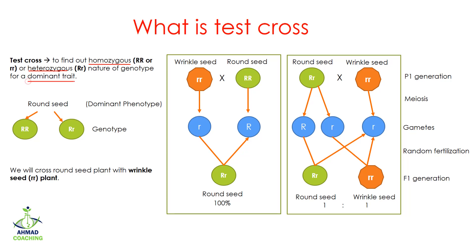For example, you have two plants — one round shape plant and the other plant is also round shape. Phenotypically they both are round shape, but I want to find out whether they are homozygous or heterozygous. So to find out their genotype, I will perform a test cross. Always remember: test cross is used to find out the homozygous or heterozygous nature of a trait.